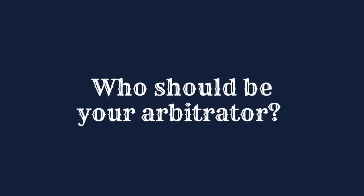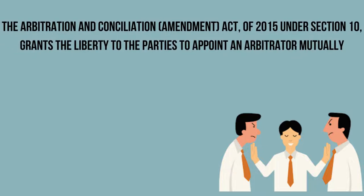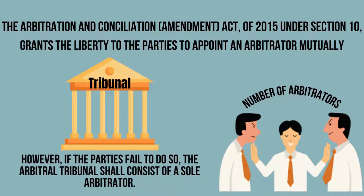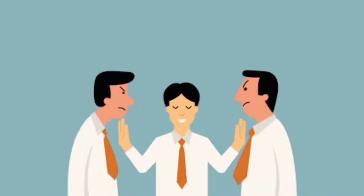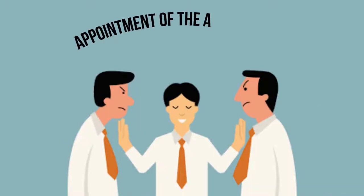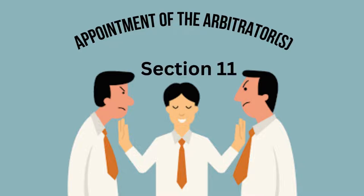Regarding who should be your arbitrator: Section 10 of the Arbitration and Conciliation Act 2015 grants the parties liberty to appoint an arbitrator mutually. The parties are free to determine the number of arbitrators, provided that such number shall not be an even number. However, if the parties fail to do so, the Arbitral Tribunal shall consist of a sole arbitrator. The procedure for appointment is provided under Section 11 of the Act.